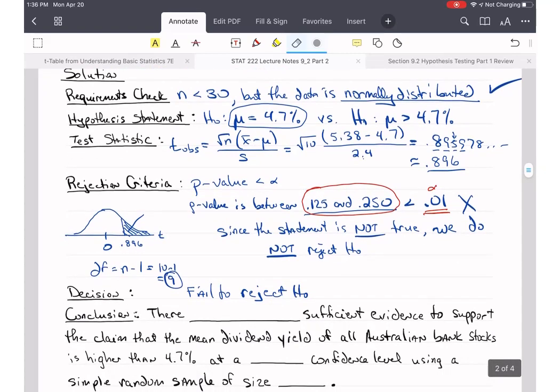Again, everything else works about the same. We fail to reject the null. There does not exist sufficient evidence to support the claim that the mean dividend yield of all Australian bank stocks is higher than 4.7% at a 99% confidence level. Again, we're taking confidence level, which is C, C is equal to 1 minus alpha, which is 1 minus 0.01, which is 0.99, which is 99%. Using a simple random sample of size 10.